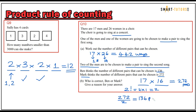The answer is 136 pairs. Therefore Ben is correct. You need to divide by two because both men come from one category, creating duplicates. Dividing by two eliminates those duplicates to give 136. That is the end of the tutorial — hope you understand the product rule of counting and do well in your exam. All the best!